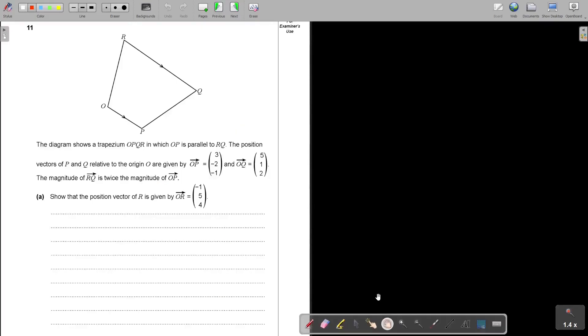Question number 11. Just by looking at it, I can see this is vectors. The diagram shows a trapezium OPQR in which OP is parallel to RQ. I can see it in the picture. The position vectors of P and Q, that means from O, so OP and OQ to the origin O are given by - in column form they gave it. The magnitude of RQ is twice the magnitude of OP. This is this. I want to underline it. We're going to definitely use this statement. And then they say show that the position vector of R, that means OR, is going to be this.